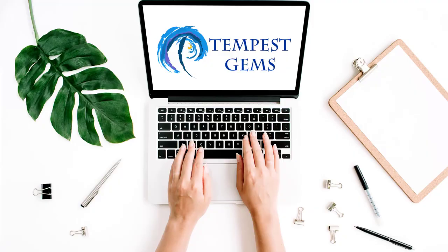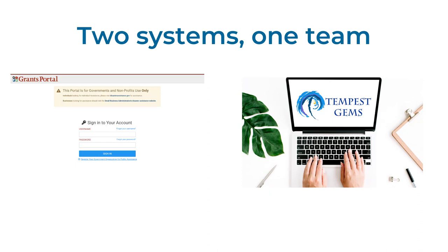The target for grant management is a successful closeout and recovery of all possible money within the framework of the law and grant rules. Tempest Gems, while it can be bought and provided by a federal agency, is normally provided by a state or territory or bought by an applicant. Software serves the needs of the owner. Two systems are not competing — they do different jobs differently. FEMA Grants Portal works with you to get a completed application and a grant awarded with funds obligated. Tempest Gems takes the long view on closeout and reimbursement with guidance on policies. Two players on the same team.